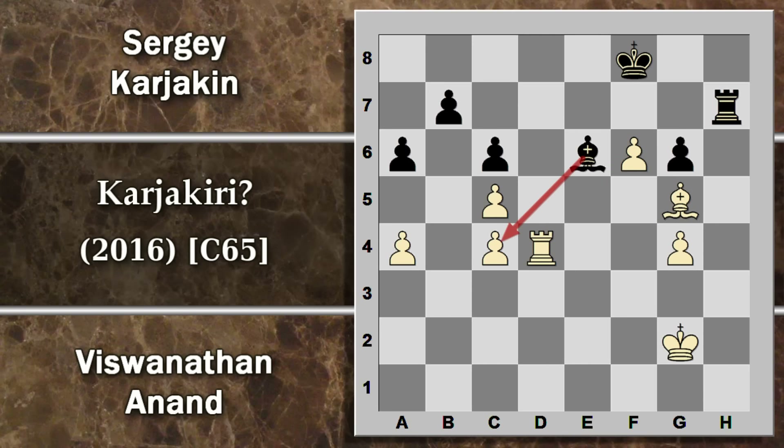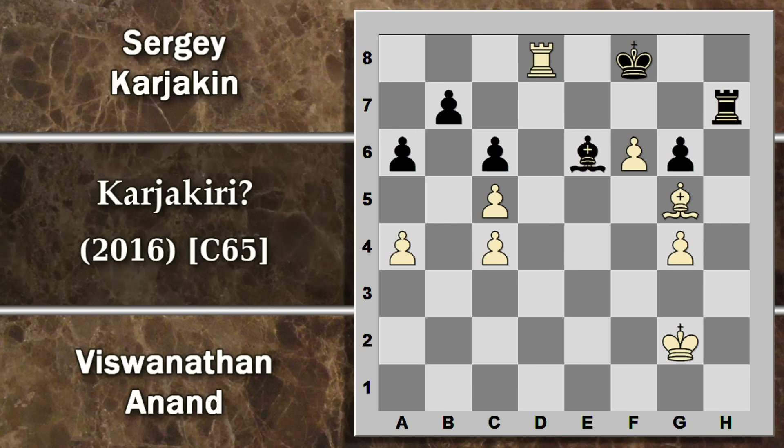Alfiere E6: il nero riattiva un po' l'alfiere. A questo punto è il momento di Anand di passare al contrattacco: lo sguardo si sposta da un'altra parte. Viene dato uno scacco, il re si sposta e il prossimo obiettivo di Anand è questo pedone. Non è facile riuscire a difenderlo. Sembra che il nero possa catturare ed effettivamente lo fa.